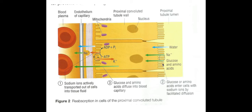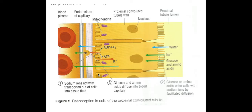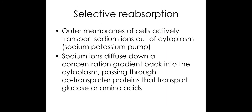Once glucose and amino acids have been moved into the cells lining the proximal convoluted tubule wall by facilitated diffusion using co-transport, they then move into the bloodstream again by facilitated diffusion. Glucose and amino acids are too large to diffuse through the phospholipid bilayer, so they must use a protein carrier to enter the blood. That is selective reabsorption in the proximal convoluted tubule.